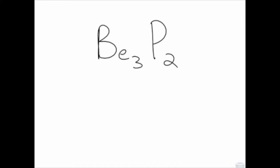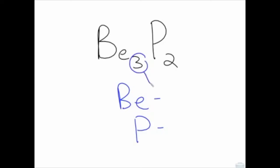Here is another example: beryllium phosphide. First, list the elements — beryllium and phosphorus. The subscript three means there are three berylliums. The subscript two means there are two phosphoruses.